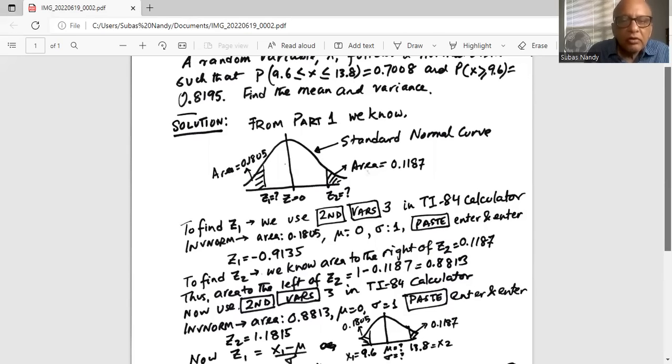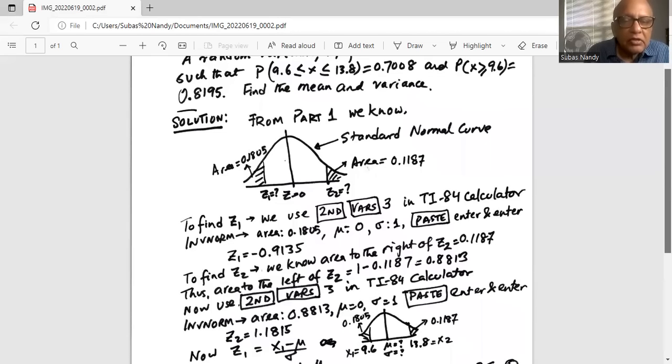To find z2 we know the area to the right but the calculator takes area to the left. Total area under the curve is 1. So area to the left of the unknown z2 is 1 minus area to the right which is 1 minus 0.1187 which is 0.8813.